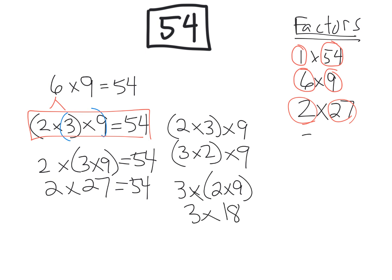Now what's 3 times 2 times 9? Well, that's 3 times 18. So we have another two factors of 54. And so the idea of this lesson is the idea that we could take one of the factors, decompose it, and then use the associative property to find other factors.